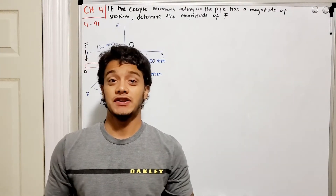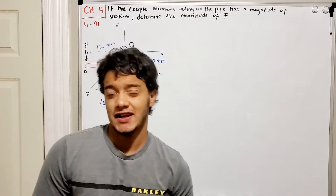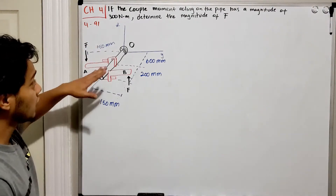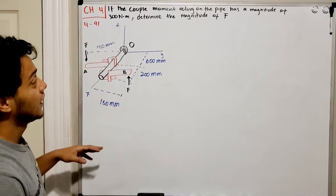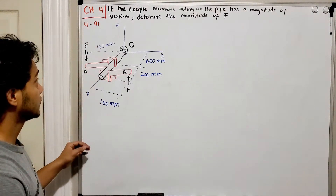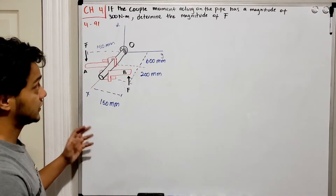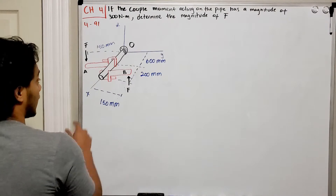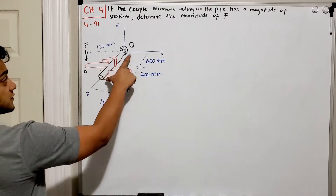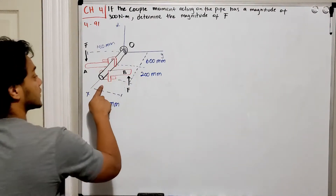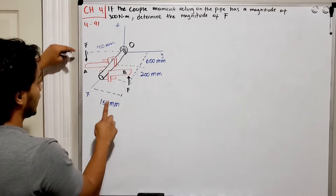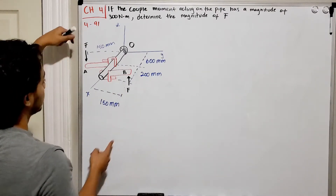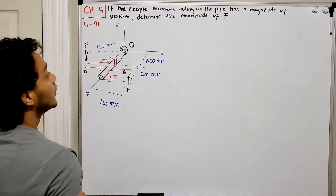Welcome back everyone to Learning by Teaching. We're in statics and we're going to do problem 4.91. It says: if the couple moment acting on the pipe has a magnitude of 300 newton-meters, determine the magnitude of the force. We have this pipe lying on the x-axis with two branches, and the forces are acting on these two branches — one going up and one going down.